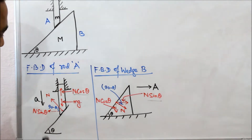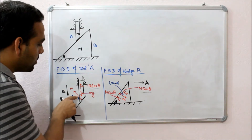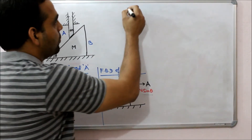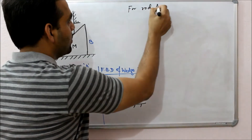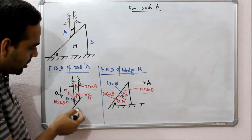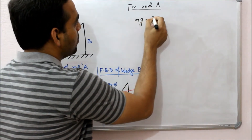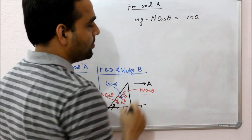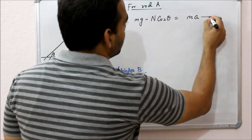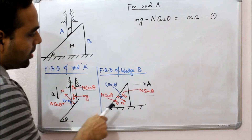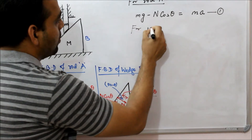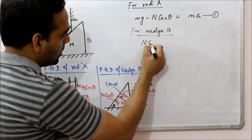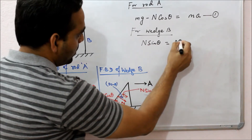Now let us find out the forces responsible for producing acceleration on rod A and wedge B. For rod A, the net force along the direction of acceleration is Mg minus N cosθ. So we can write: Mg minus N cosθ equals mass of the rod multiplied by the acceleration 'a'. This is equation number 1. Similarly, the net force on the wedge along the direction of acceleration is N sinθ, and it equals mass of the wedge multiplied by the acceleration 'A'. This is equation number 2.